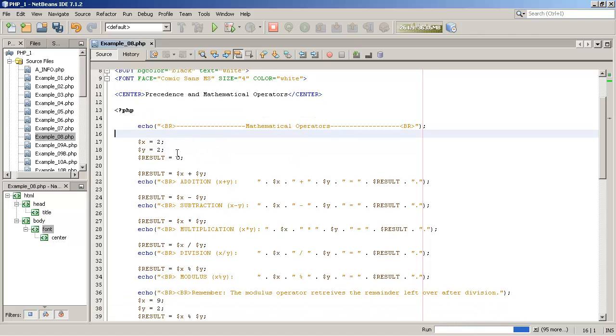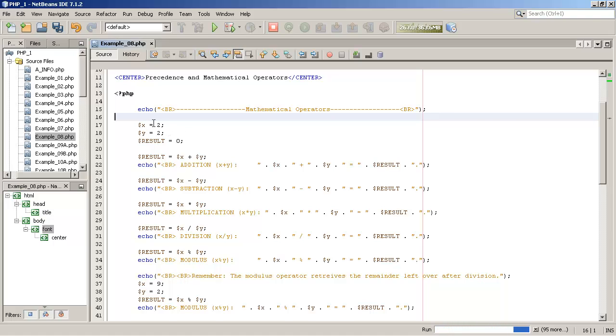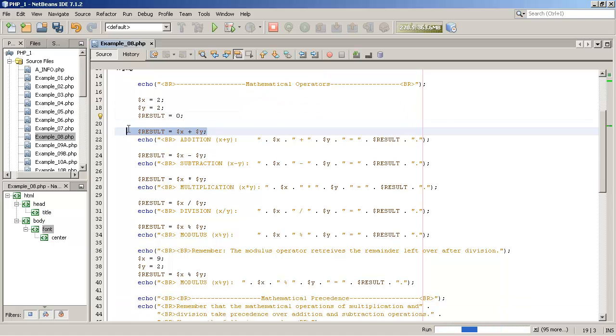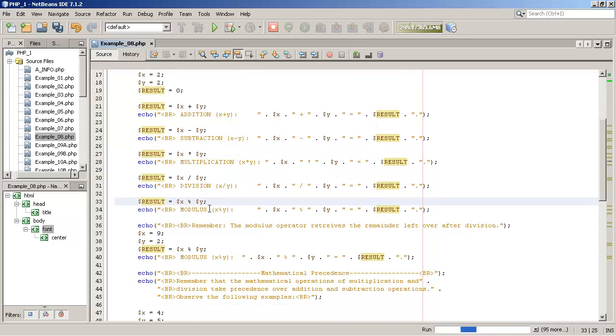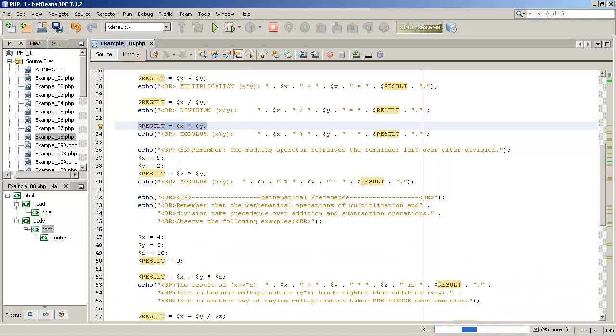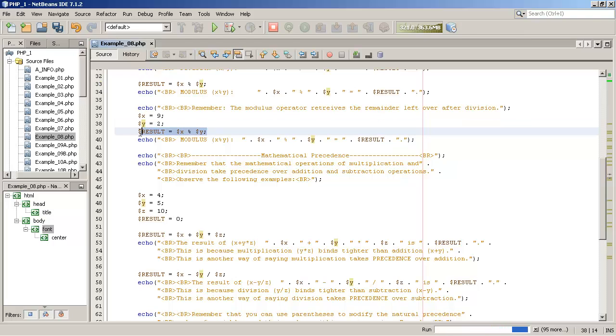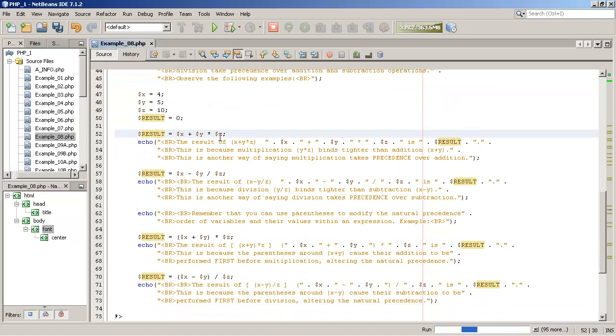So let's just go over some of the basics here. Notice in this first example, X is 2, Y is 2, and the result here is initialized with 0. So we're just going to add and display the result, subtract, display the result, multiply, and divide. Here we're going to use the modulus operator, which will simply show the remainder left over after division. Same thing here with the modulus operator, simply going to return the remainder left over after division.